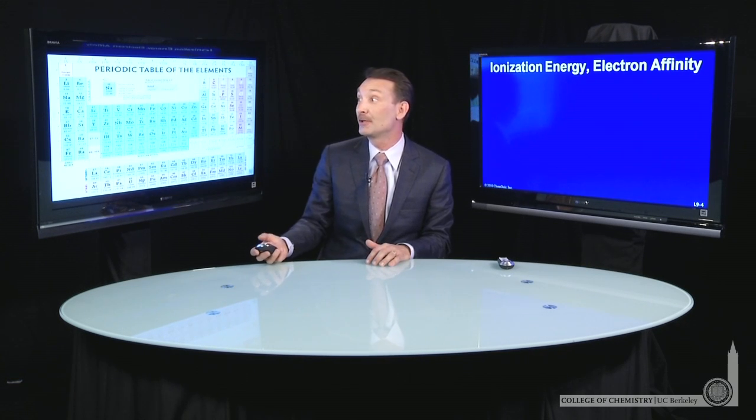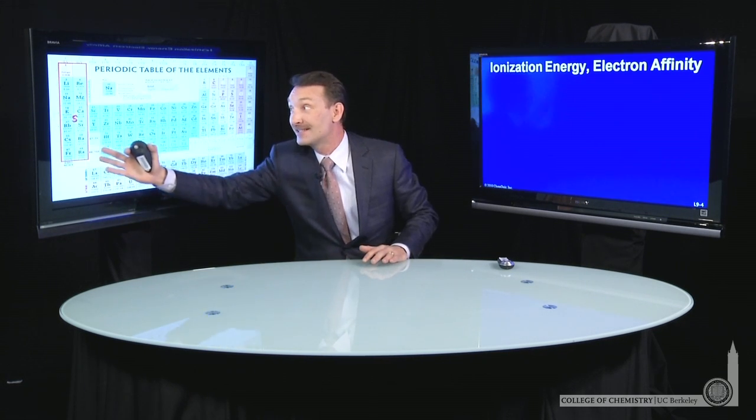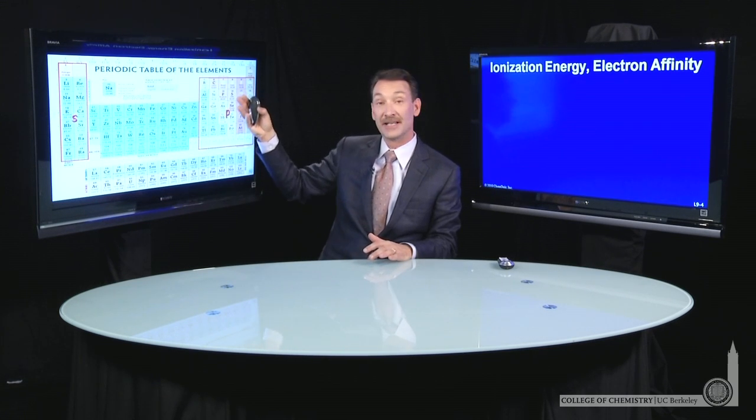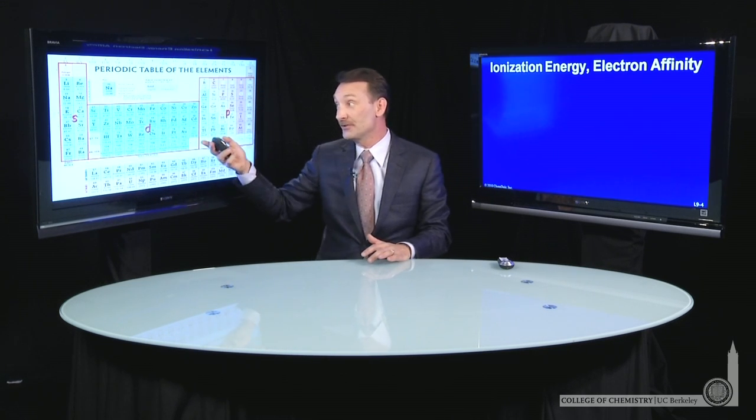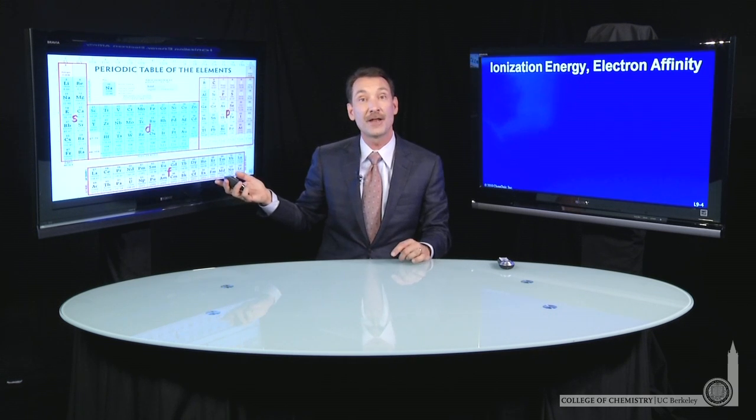In fact, we know the periodic table is set up so that the S orbitals are filling here, the P orbitals filling here, D orbitals fill along the center, and F orbitals along the bottom.